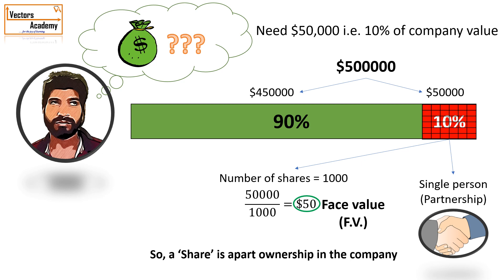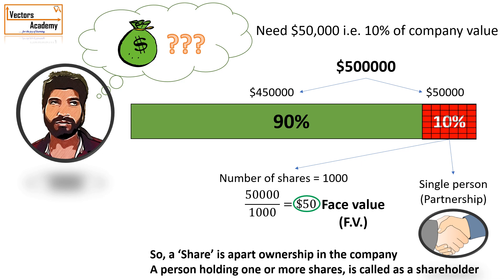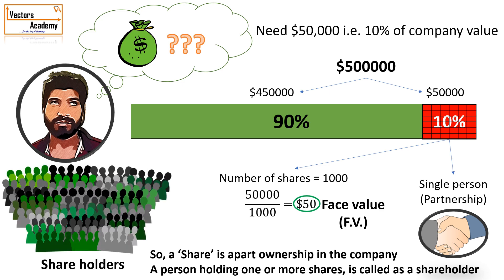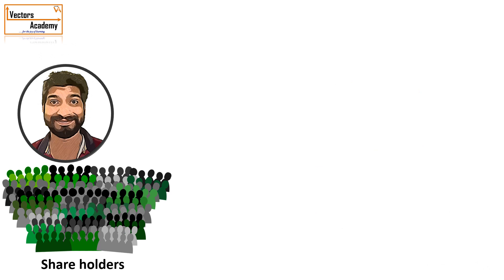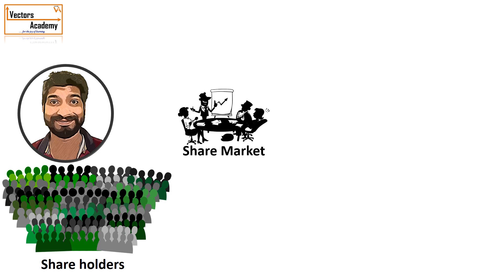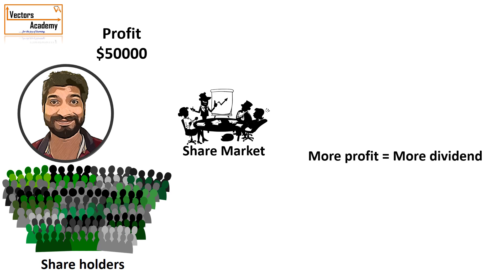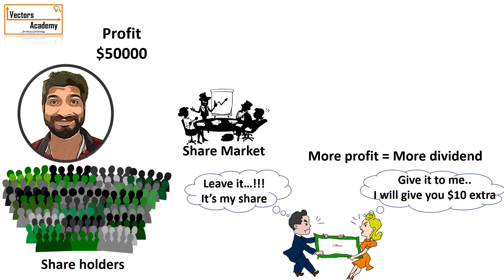A share is a part ownership in the company, and the face value is the price of that part ownership. The person who holds the share is called a shareholder. With a thousand different shares, there can be a thousand shareholders. These shareholders can then move to the share market to sell and buy shares. When the company makes a profit of around fifty thousand, it pays the shareholders some dividend — the more the profit, the more the dividend.